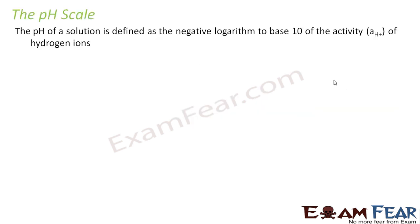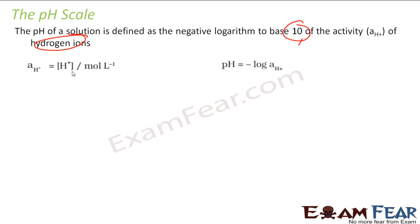Let's talk about pH scale. The pH of a solution is nothing but the negative logarithm of base 10 to the H plus ion concentration. If H plus ion concentration is some value in moles per liter, the pH is going to be minus log of H+. Now the question is why do we have pH?